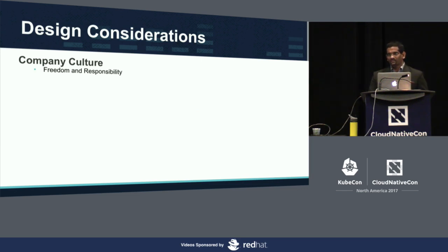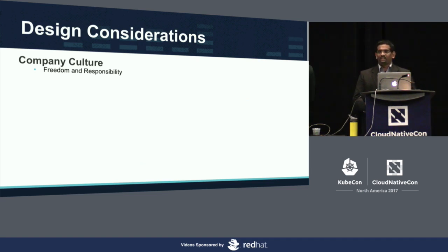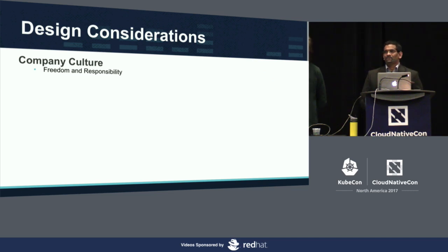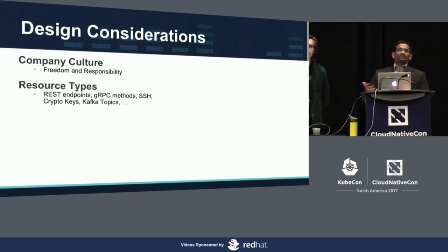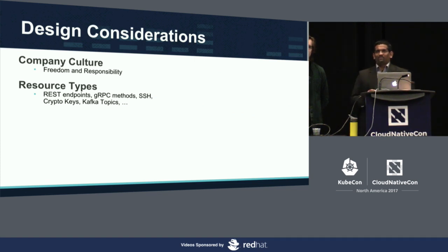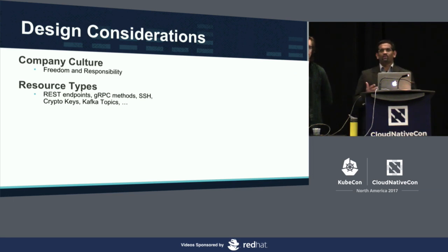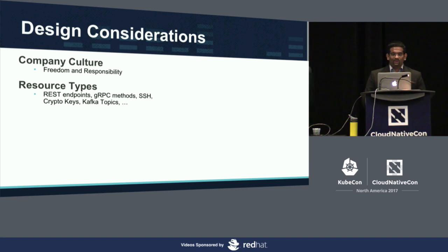All our engineers and developers and teams are free to do whatever is best for their own service. In this environment, when they have ownership of their own service, they are also required to define who gets to talk to their service at what level. So if a solution is not giving them that kind of freedom, it's not going to fly at Netflix. Second requirement — resource type. We don't have just one resource type. We don't want a solution only for REST or gRPC services. I'm also talking about SSH access. If you have a VM and you need SSH access, SSH becomes your resource.